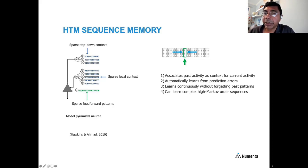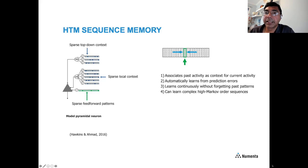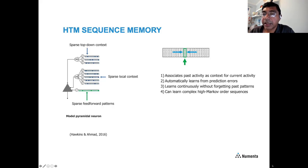Past context is treated as a modulatory input impacting current activity. Each neuron is predicting, based on what happened at time t-1, whether it will recognize its feedforward pattern. Applying the three learning rules, each neuron and the network as a whole constantly learns from prediction errors. If a neuron spikes but there was no past context detected, that's treated as an error and it learns to recognize that context. Conversely, if it recognized past context but there was no feedforward activity, it starts forgetting that context. In this manner, every neuron learns continuously, and because everything is highly sparse, it can learn without forgetting past patterns. These networks can learn complex, high Markov-order sequences — detailed in our 2016 paper.